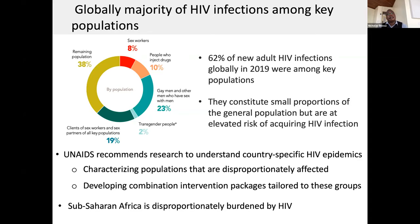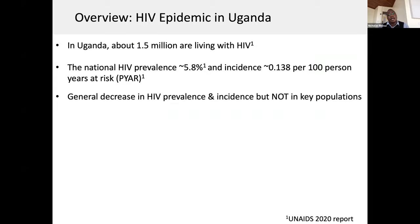We also know that countries in sub-Saharan Africa are among the worst affected countries globally. Shifting attention to Uganda, about 1.5 million people are currently living with HIV. The national HIV prevalence is estimated at about 5.8% to 6%, and the incidence is really less than 1 per 100 person-years at risk. There's generally been a decrease in HIV prevalence and incidence.